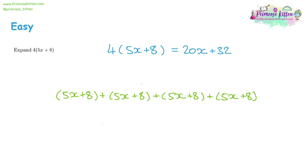Of course, you don't want to write out all the brackets each time — four is probably the limit. The shortcut is: you do four times 5x, which gives 20x, then four times 8, which gives 32. With linear expansions, you can also have two things outside the bracket.